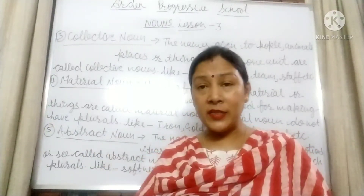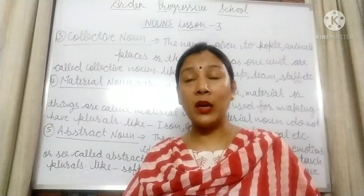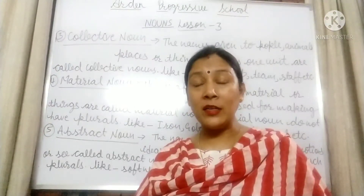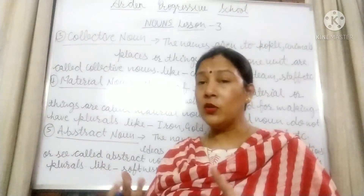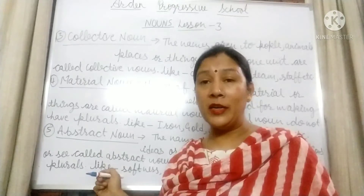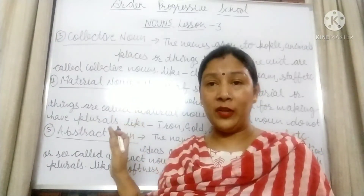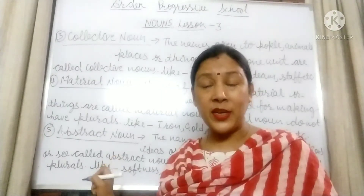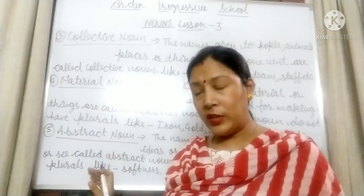Abstract nouns are qualities, feelings, emotions — whenever a noun tells about emotions or feelings, those are abstract nouns. Keep in mind that material noun and abstract noun do not have their plurals. The five kinds of noun are: proper noun, common noun, collective noun, material noun and abstract noun. Whereas for other nouns we can see and feel them, abstract nouns we can't see or touch — that is the speciality of abstract noun.